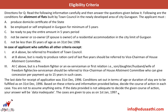In these type of questions you will have some information like you see on the screen. Read the following information carefully and then answer the questions given below it. Following are the conditions for allotment of flats built by the town council in the newly developed area of the city Gurgaon. The applicant must: (A) produce a domicile certificate; (B) be employed or self-employed in Gurgaon for a minimum of five years; (C) be ready to pay the entire amount in a five-year period; (D) not be the owner or co-owner — co-owner meaning your spouse is the owner — of a residential accommodation in the city limit of Gurgaon.